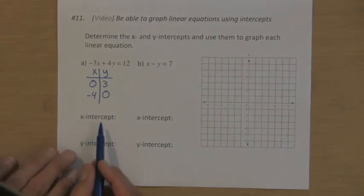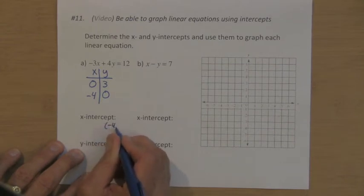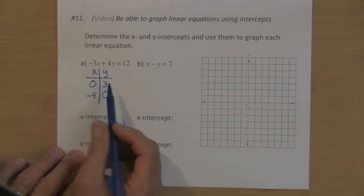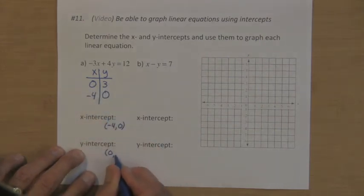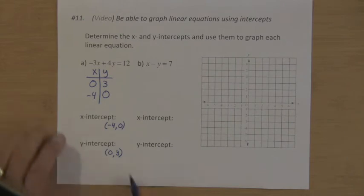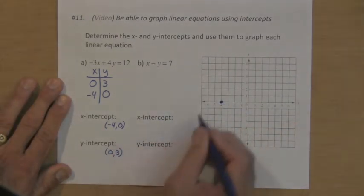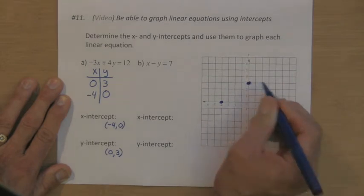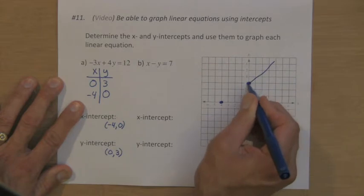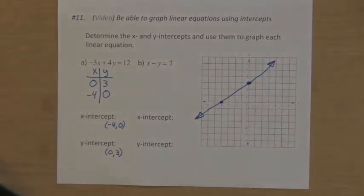Label them down here. Your x-intercept is when y equals zero, so that's at the point negative four, zero. And your y-intercept is when x equals zero, which is zero, three. We'll graph those two points and draw that line. So here's negative four, zero, right here, and here's zero, three. That's what that line looks like — two easy points to find, and that's the equation of that line graphed.